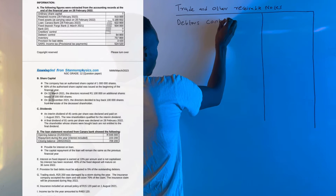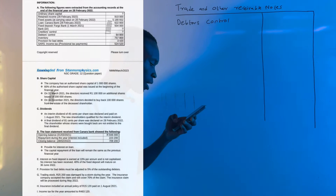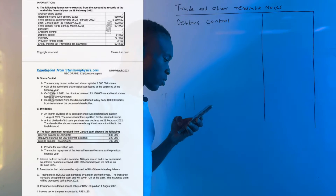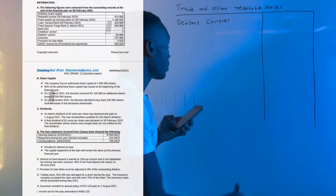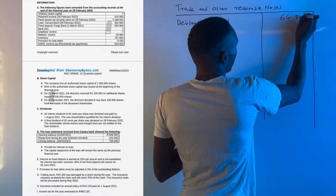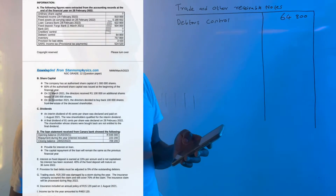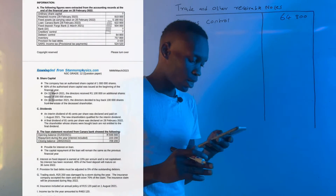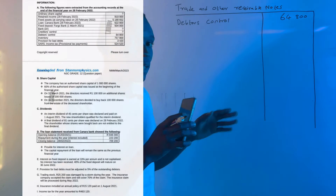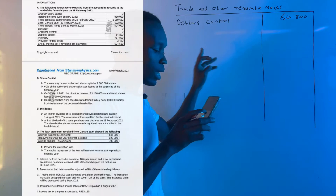Let's check if we have a debtors control under our accounting records. Yes, we have a debtors control of R64,800. However, we need to check step two — whether we have any provision for bad debts that we need to adjust and subtract to find the net debtors figure.